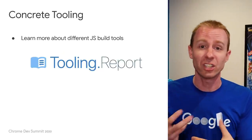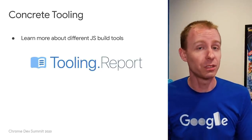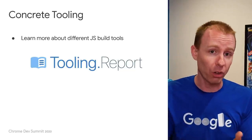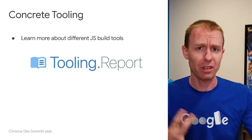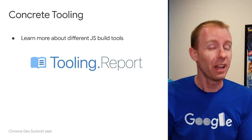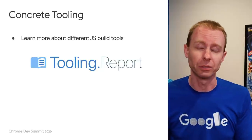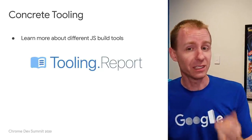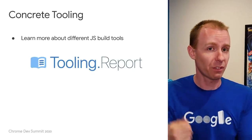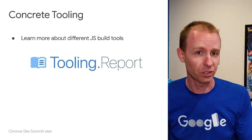I'd encourage you to check out tooling.report for a comparison of different build tools — it currently lists Webpack and Rollup, which I've mentioned. The really important takeaway is that hashing is going to be a huge saver because the files you generate can be made immutable. It also includes a tool called Parcel, which is a bit newer than Rollup and Webpack — it's more holistic and tends to reach into your HTML and actually change these hashes for you. But it's different from these other tools, so please check out the tooling report site.